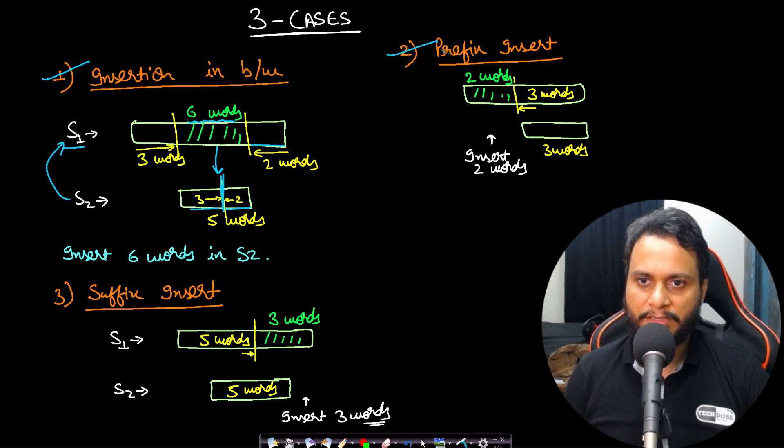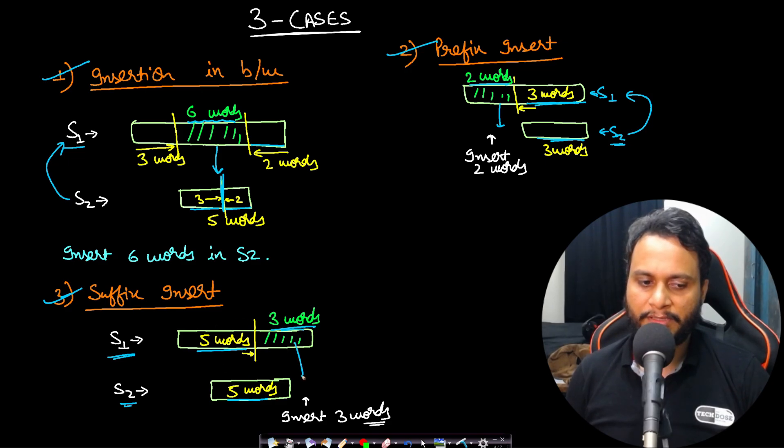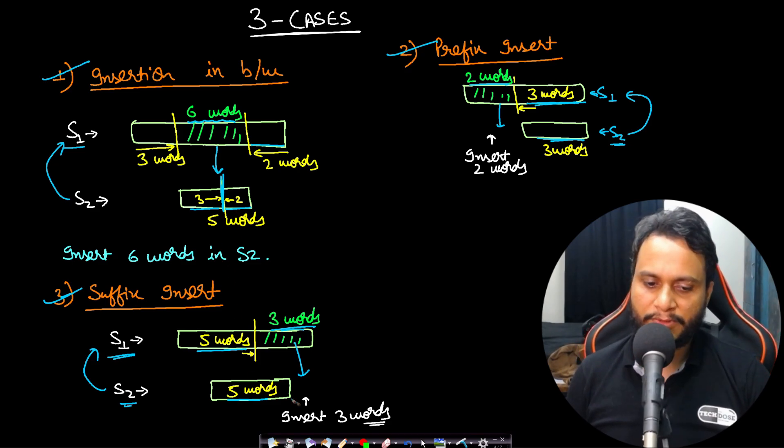Similarly, we can see the prefix insert case. In this case, string S2 has three words and this is matching with string S1's last three words. So the two words in the beginning can be inserted in S2 to make it equal to S1. Let's look at the third case which is suffix insert. If S1 has eight words and the first five words are matching with the first five words of S2 and S2 had exactly five words, then I can insert the last three words at the end of S2 to make S2 equal to S1. So these are the only three cases which can happen for this problem. Rest all cases should return no.